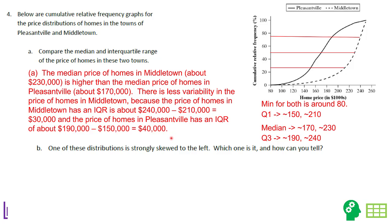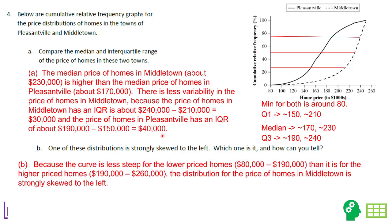One of these distributions is strongly skewed to the left. Because the curve in Middletown is less steep for lower-priced homes than for higher-priced homes, most of the data is at the high end, with 75% of the data concentrated in a narrow upper range. The minimum is around $80,000, so there are data points at the low end — but Middletown is more strongly skewed left. This is a cumulative distribution function showing probabilities going up to 100%.